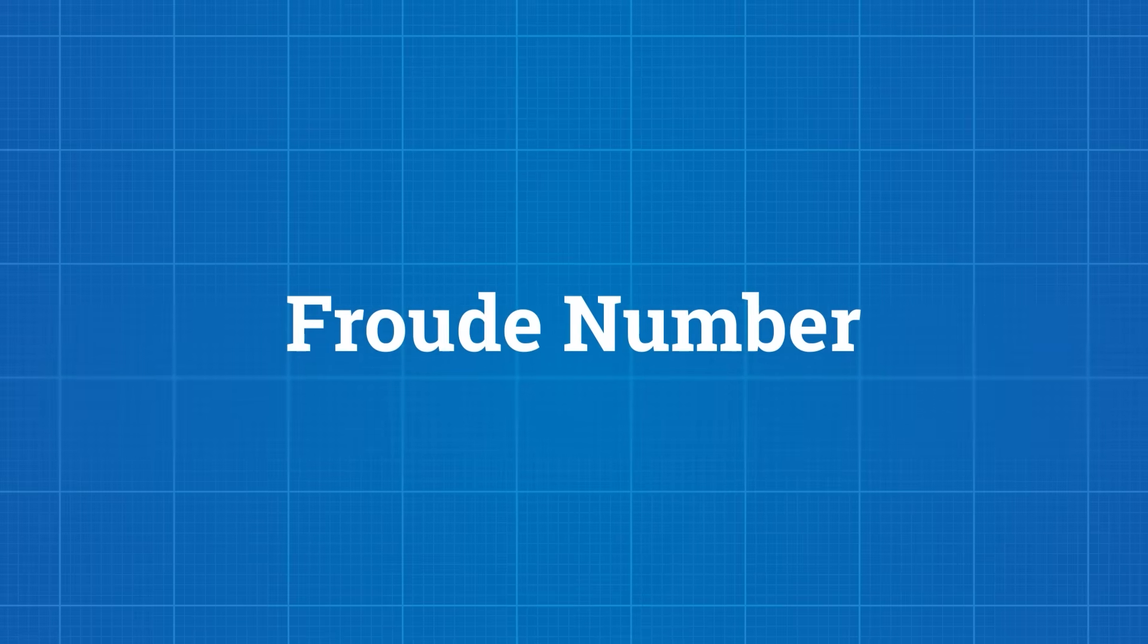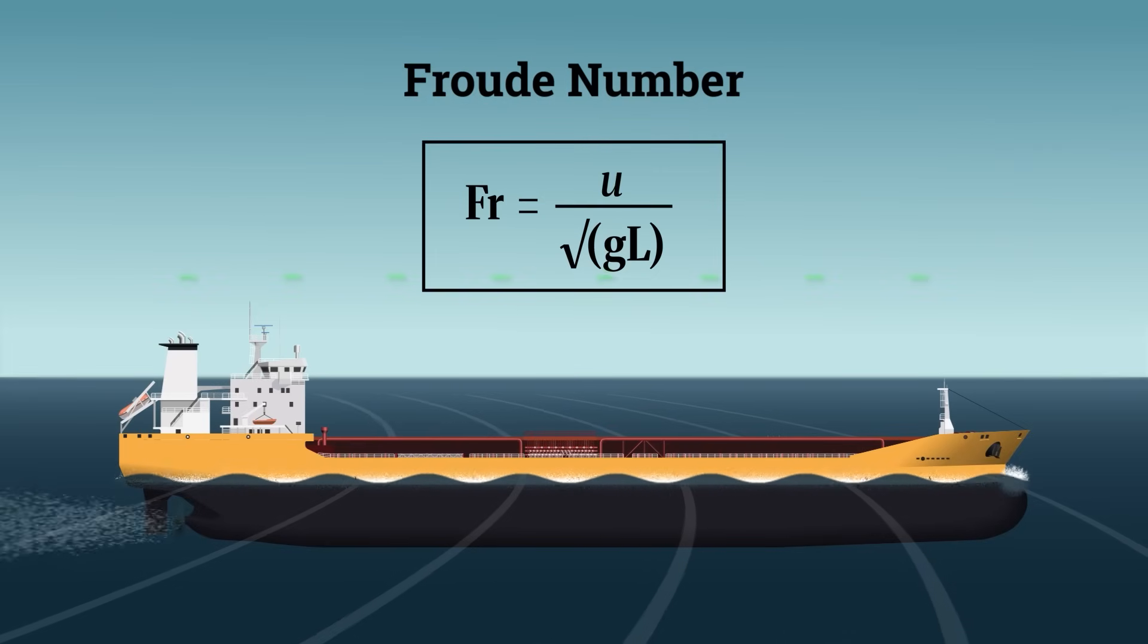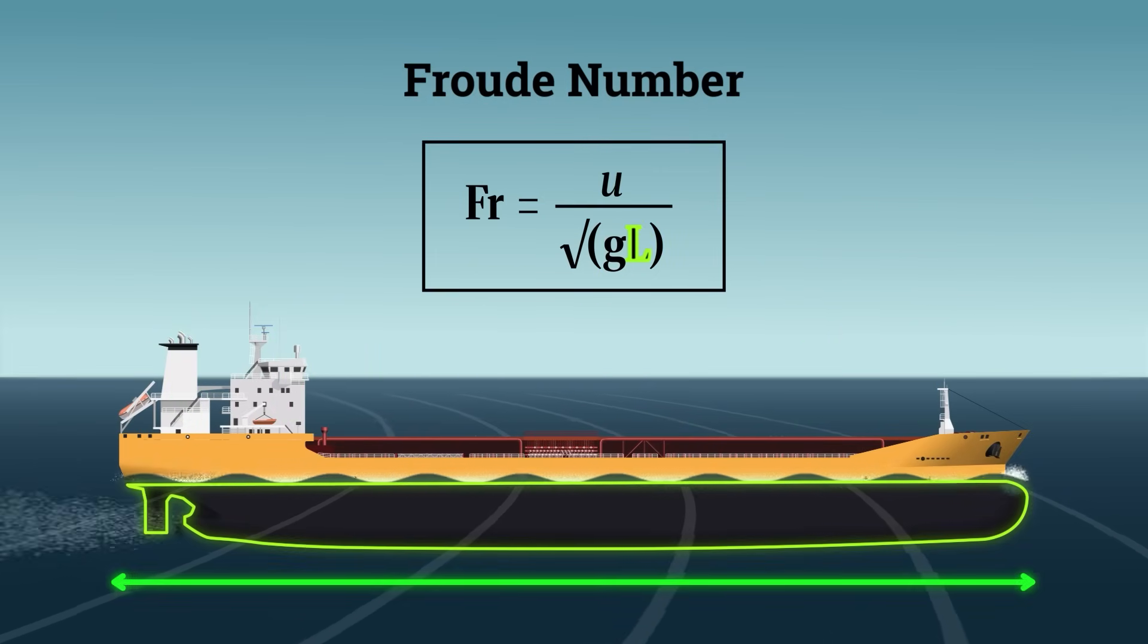That's where the Froud number comes in. It's a dimensionless ratio that balances gravity and inertia. Where U is the design speed of the vessel, G is the acceleration due to gravity, and L is the characteristic length, typically the waterline length of the ship.